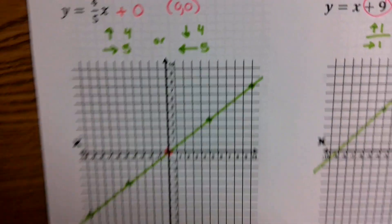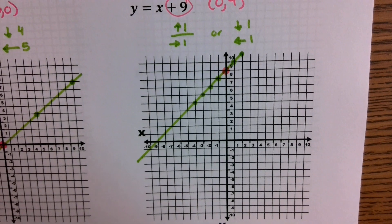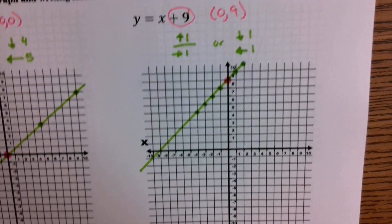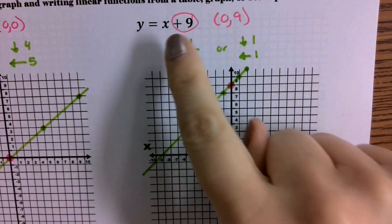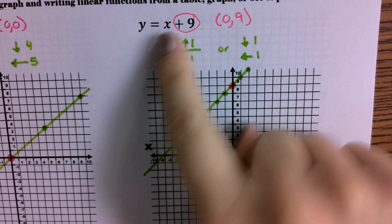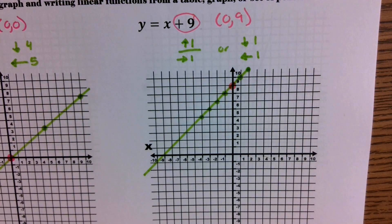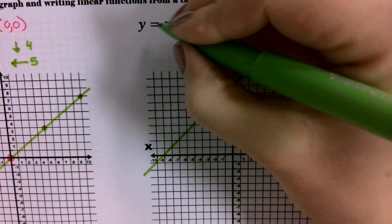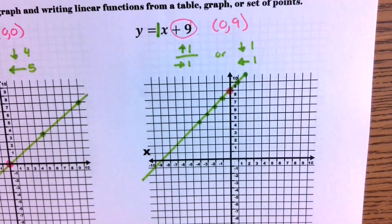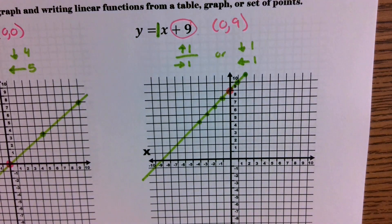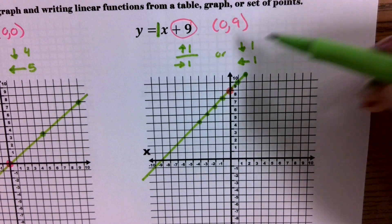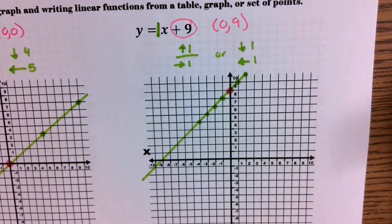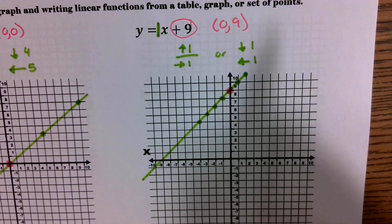For our next example, y = x + 9, so (0, 9) is your y-intercept. There isn't a coefficient written for x, so we automatically know a coefficient of 1 exists. The slope is 1, or 1 over 1, meaning you go up 1 right 1, or down 1 left 1. And it looks like that.